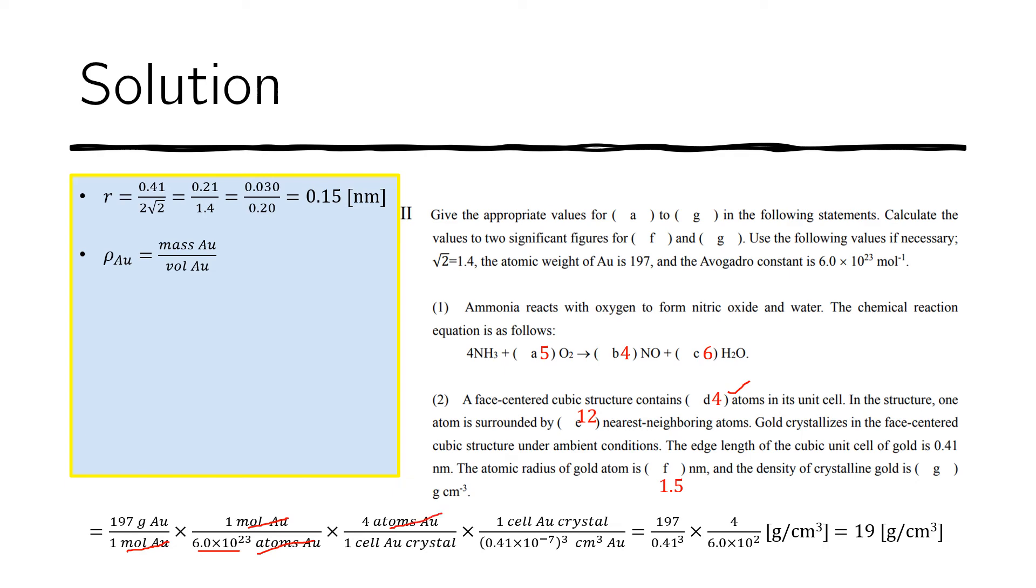And now we can cancel the atoms of gold there. And we now have one AU crystal. Now, for each AU crystal, for each gold crystal, we know that the side is 0.41 nanometers.